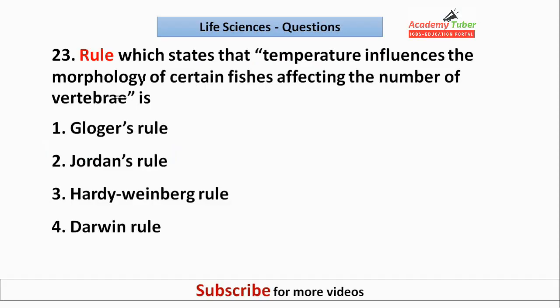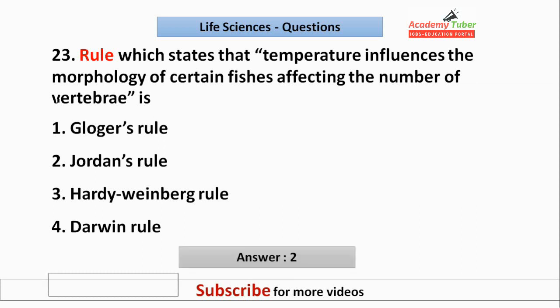The rule which states that temperature influences the morphology of certain fishes, affecting the number of vertebrae, is? The answer is Jordan's rule.